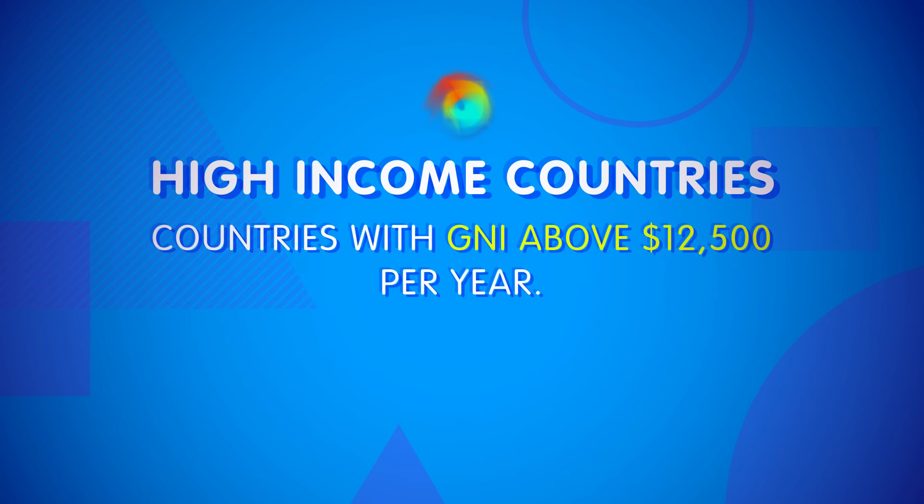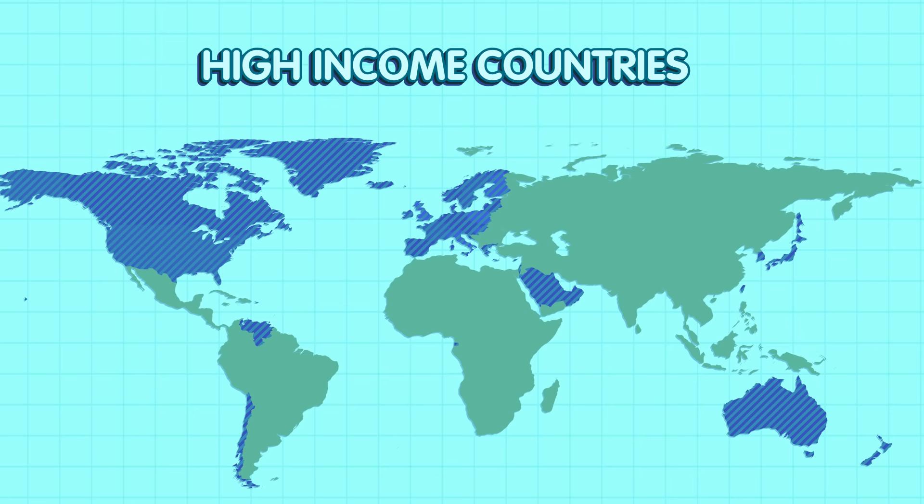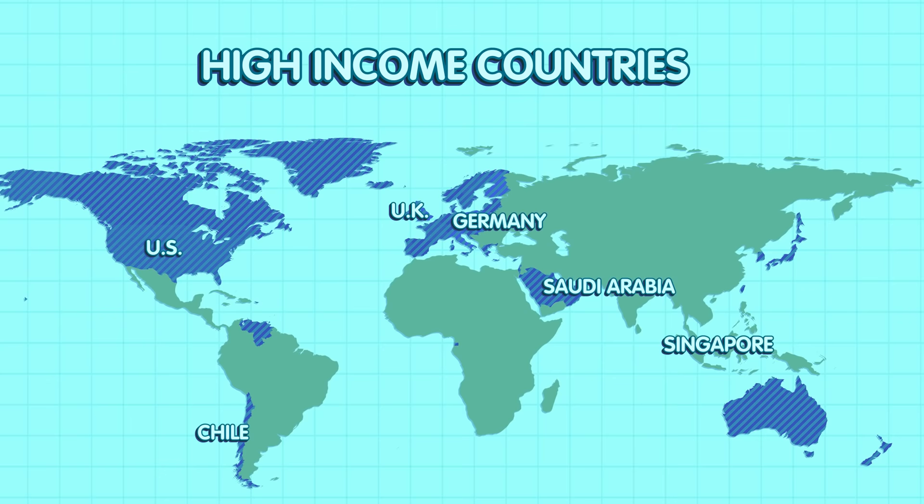Nowadays, sociologists sort countries into groups based on their specific levels of economic productivity. To do this, they use the Gross Domestic Product, or GDP, which measures the total output of a country, and the Gross National Income, or GNI, which measures GDP per capita. High-income countries are those with GNI above $12,500 per year. There are 79 countries in this group, including the US, the UK, Germany, Chile, Saudi Arabia, Singapore, and more.